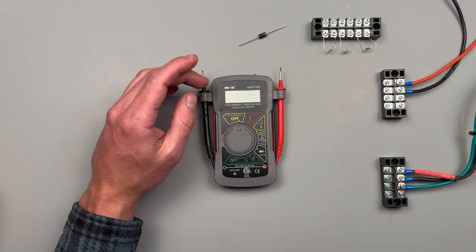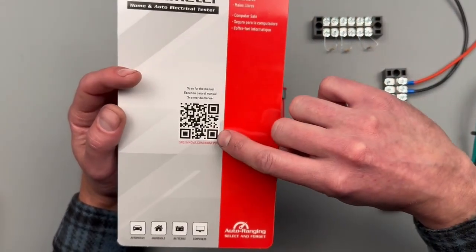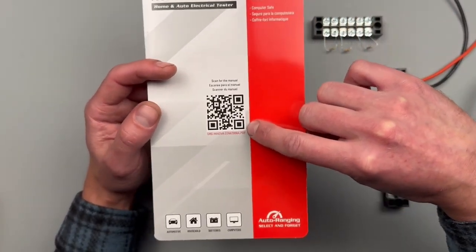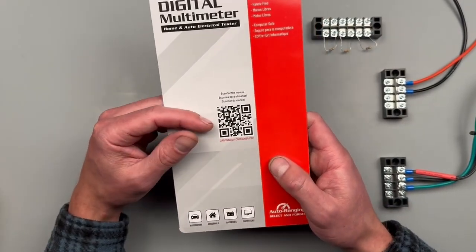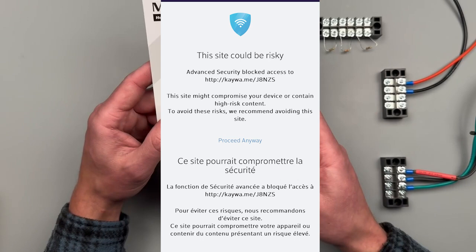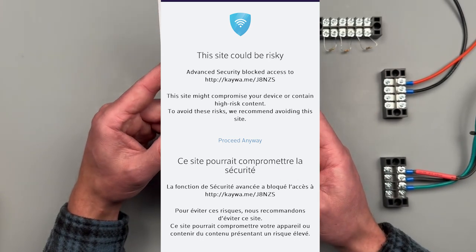The first issue I found in unboxing this meter - I always like to go through and scroll through the manual. They have this QR code on the packaging you can scan with your camera and it'll take you to the web address for the owner's manual. However, I'll put up on the screen what my web browser took me to.